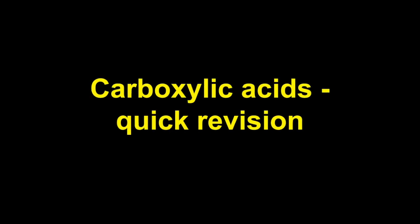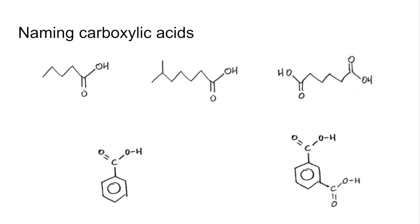Quick revision video on carboxylic acids. We'll start by naming some carboxylic acids. The first one on the top left has 1, 2, 3, 4, 5 carbons, so that's pentanoic acid.